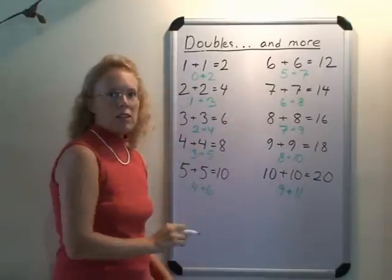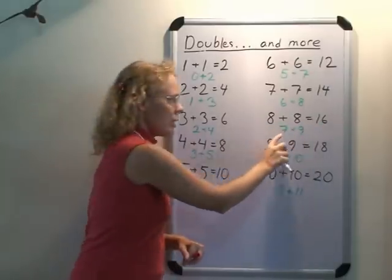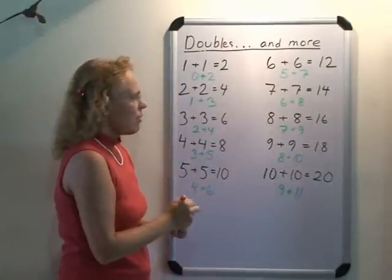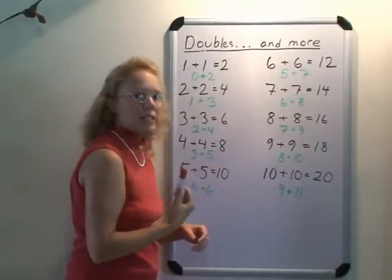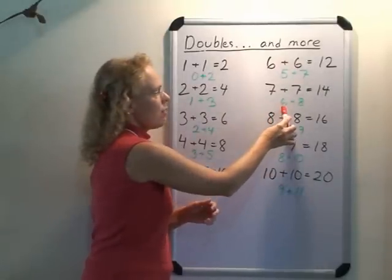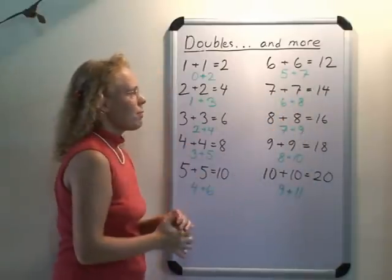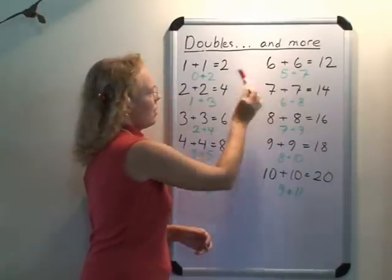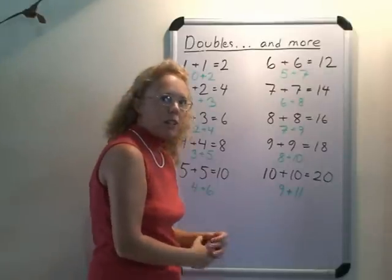And for each double, there's an accompanying fact like that. Eight plus eight is sixteen, but so is seven plus nine. And every time you have two numbers whose difference is two, these six and eight are two numbers apart, then it's kind of like if you made both of these to be the middle number seven, you get seven plus seven equals fourteen. And so this way, these kind of facts can be actually solved with the help of knowing the doubles.